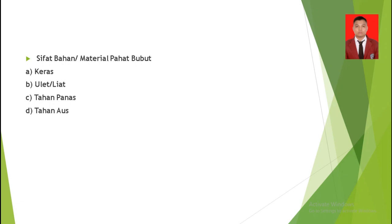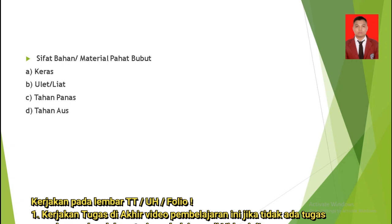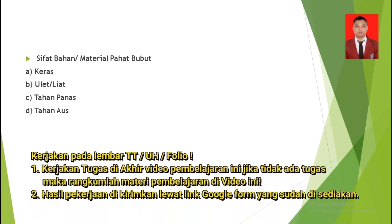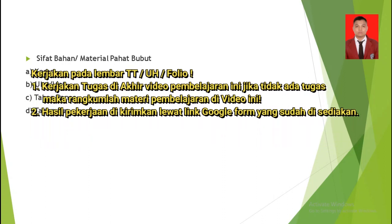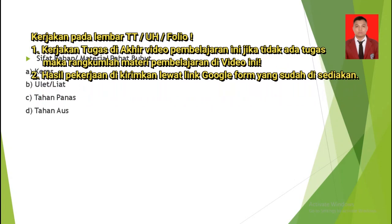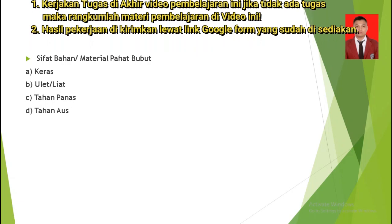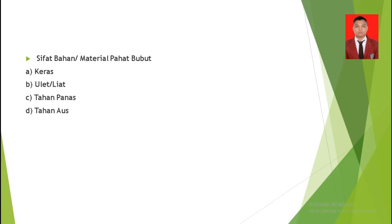Yang selanjutnya tahan panas. Pada proses pembubutan, pertemuan sayatan antara pahat bubut dan bahan akan menghasilkan panas, sehingga bahan atau material pahat bubut itu dibuat tahan panas. Yang selanjutnya tahan aus; pada pahat bubut, tahan aus sangat diperlukan. Misalnya saat penggerindaan atau mengasah pahat bubut, itu ada yang dibuat lancip, nanti bisa dilihat seberapa tahan aus pada saat penyayatan benda kerja.